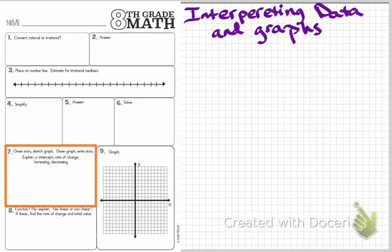Welcome to our video tutorial for question 7 of our daily review. Question 7 is asking us to interpret data and graphs that are given to us, and it actually gives us two instructions. The first says if you are given a story, you need to sketch a graph for that situation.